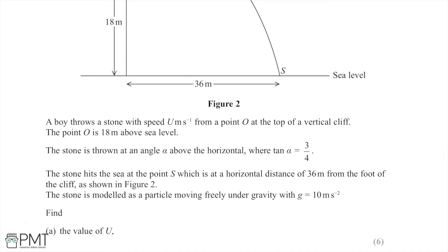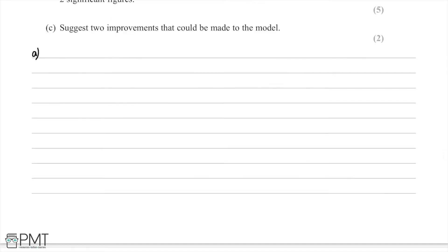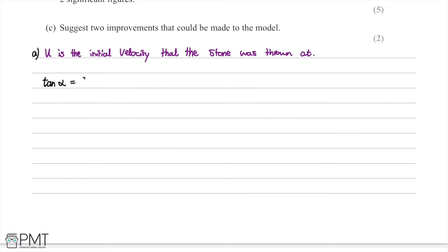In part one, we need to find the value of u, the initial speed of the stone. First, we note that u is the initial velocity. Since tan alpha equals 3 over 4, we can use trigonometry to work out cos alpha and sin alpha, as this will be very useful. Drawing a right-angle triangle with angle alpha, and using SOHCAHTOA, we know that tan alpha equals opposite over adjacent.